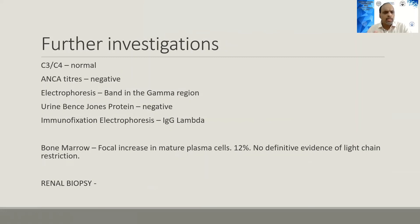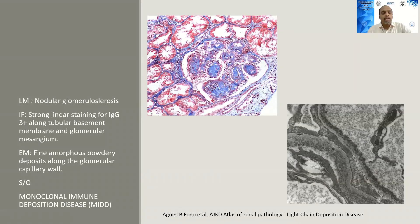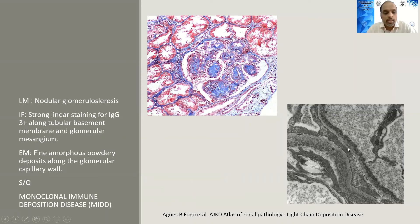Further investigation showed normal complements, but electrophoresis revealed a band in the gamma region. Urine Bence Jones proteins were negative, but immunofixation electrophoresis showed an IgG lambda band. Bone marrow showed focal increase in mature plasma cells without clear myeloma. Renal biopsy showed nodular glomerulosclerosis — not the nodular glomerulosclerosis of diabetic nephropathy. Immunofluorescence showed strong IgG staining along tubular basement membranes and glomerular mesangium, and electron microscopy revealed fine amorphous powdery sub-endothelial deposits, consistent with monoclonal immune deposition disease — likely heavy chain deposition disease, a type of MGRS.